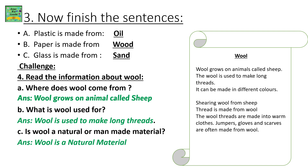Wool grows on animals called sheep. The wool is used to make long threads and can be made in different colors. Shearing removes wool from sheep. Thread is made from wool, and the wool threads are made into warm clothes. Jumpers, gloves, and scarves are often made from wool.